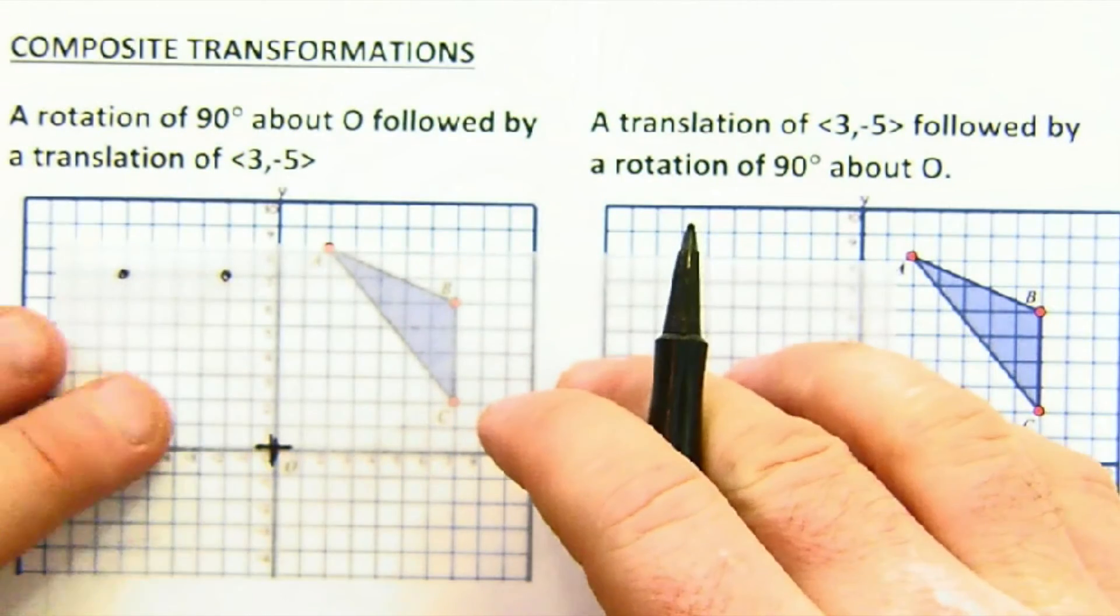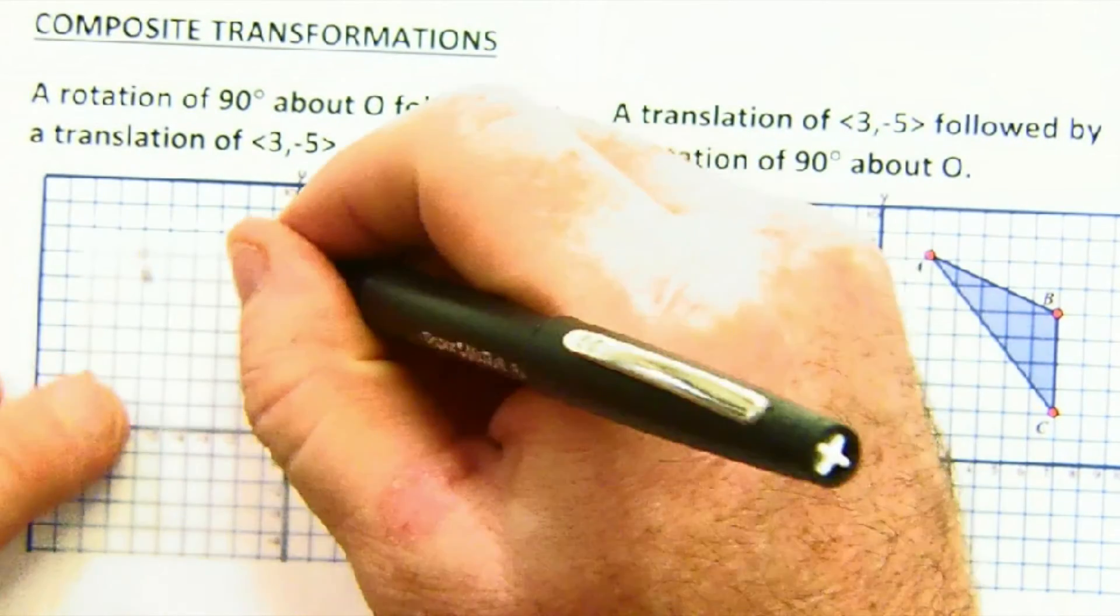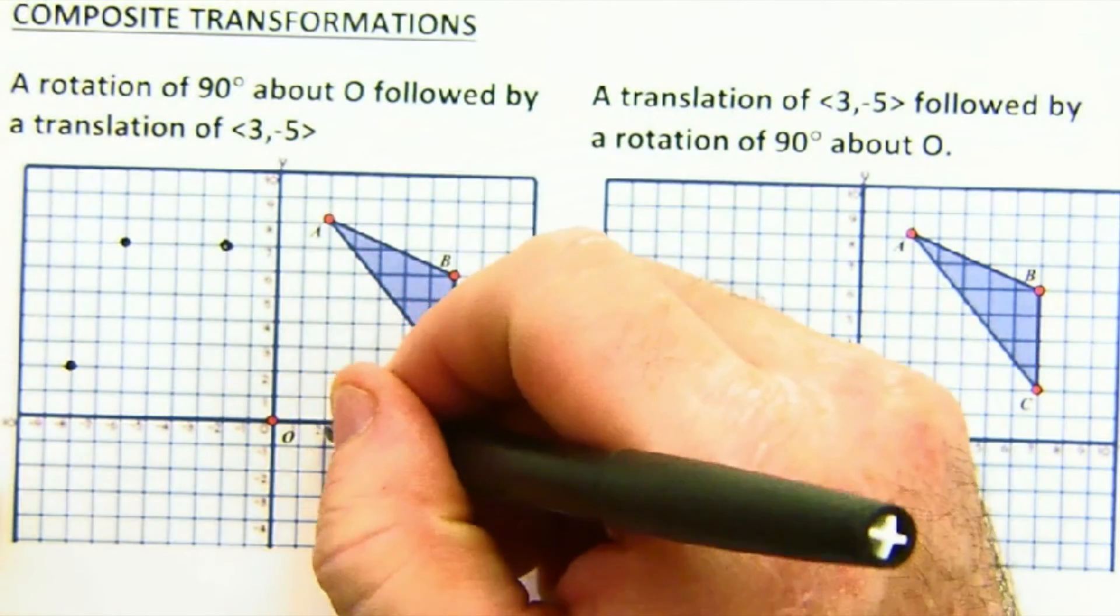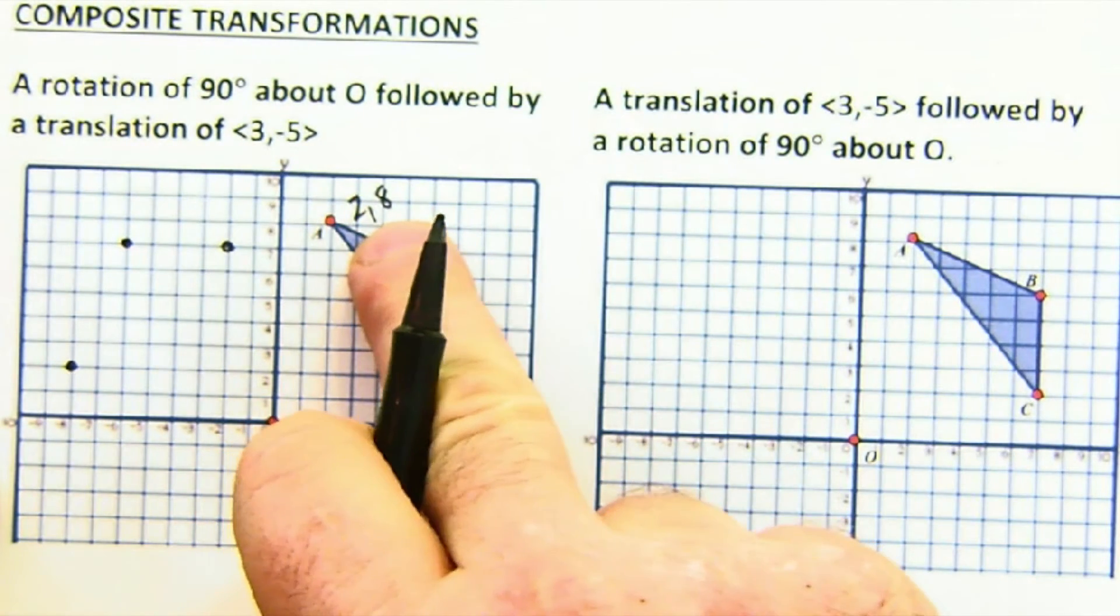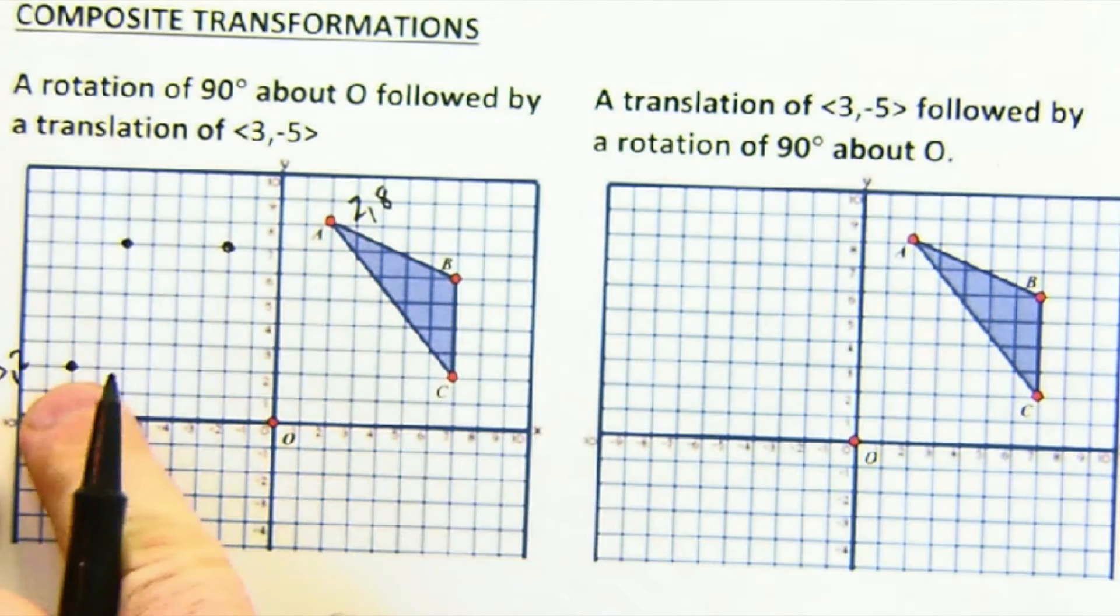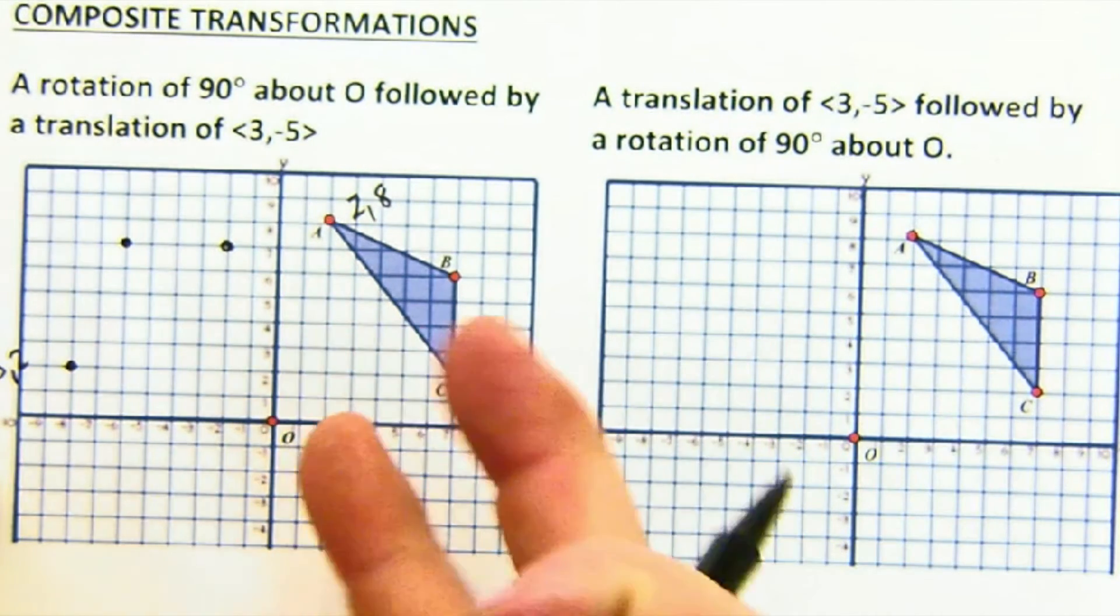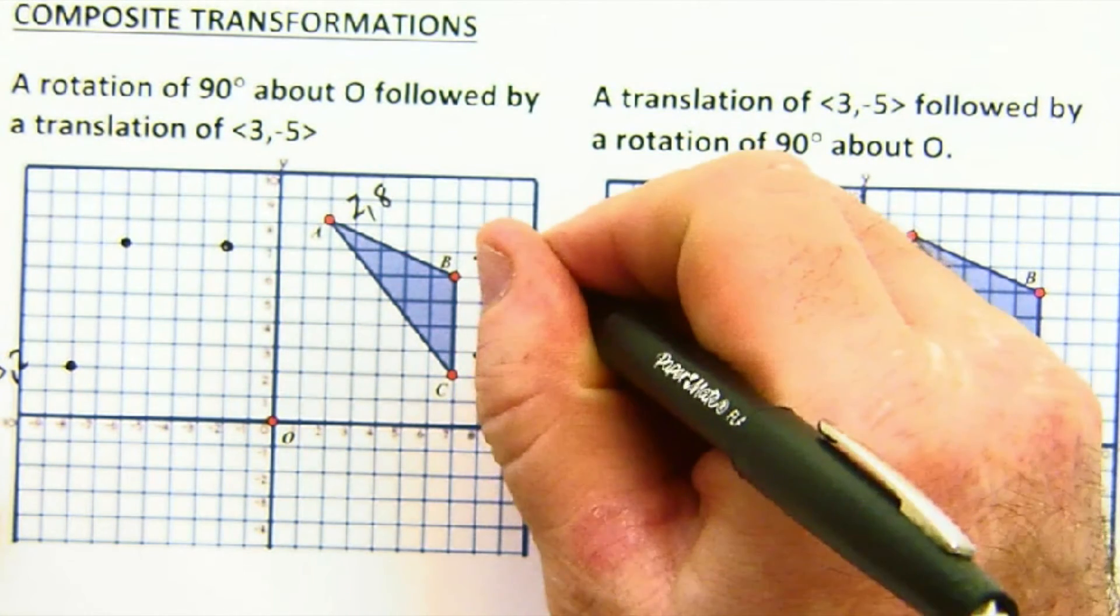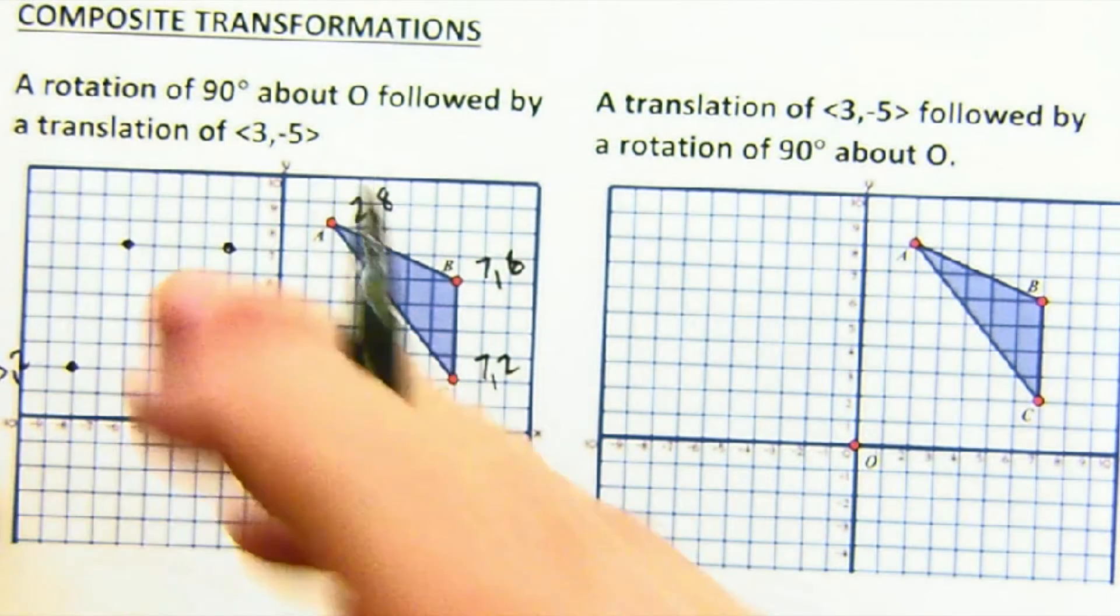Now one thing I could have done instead of pulled out my patty paper, because patty paper sometimes is a little bit of work, is I could have used my rule. So for instance, this is at (2,8), so the rule for rotating 90° is to switch and negate, which would be (-8,2)—see, that's where I'm at. This location is at (7,2). Switching and negating that x-value would be (-2,7). This is (7,6), so that would be (-6,7).